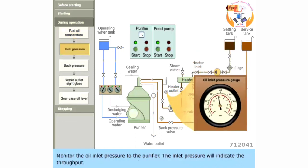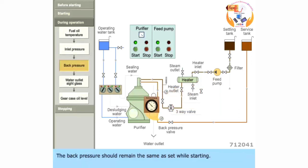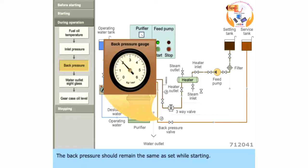Monitor the oil inlet pressure to the purifier. The inlet pressure will indicate the throughput. Decrease in the set inlet pressure indicates that the feed pump filters are dirty. The back pressure should remain the same as set while starting. If the back pressure decreases, it indicates oil overflow or oil leakage to the sludge side or decrease in the throughput.